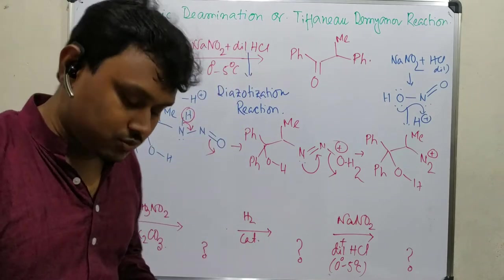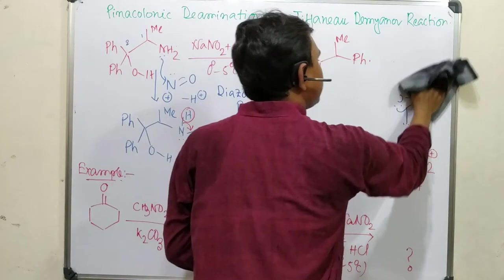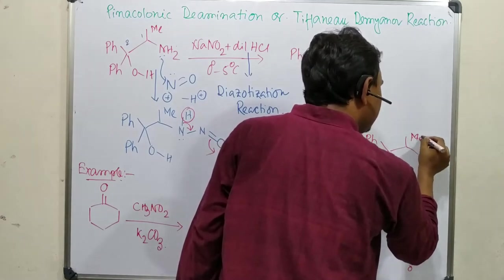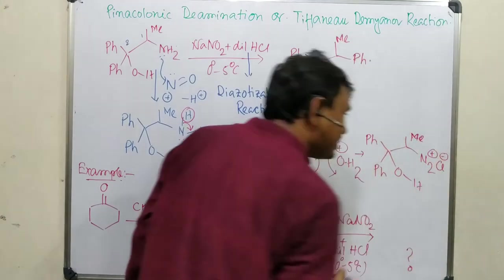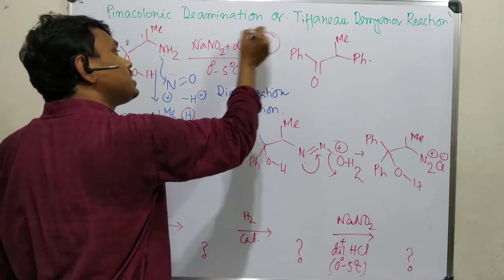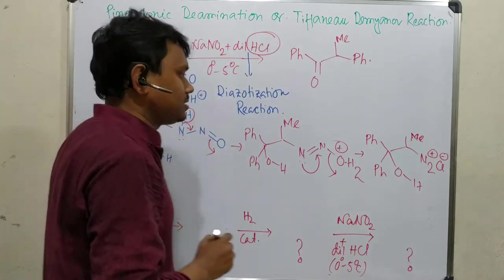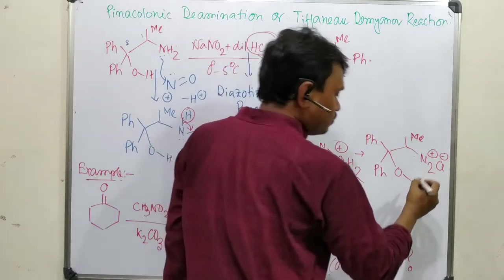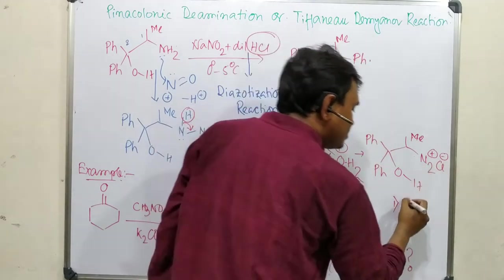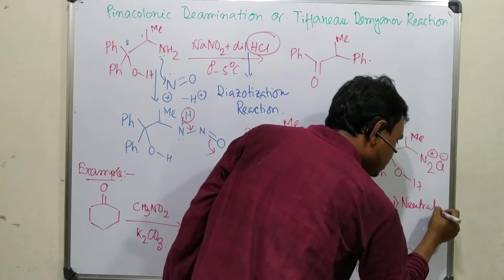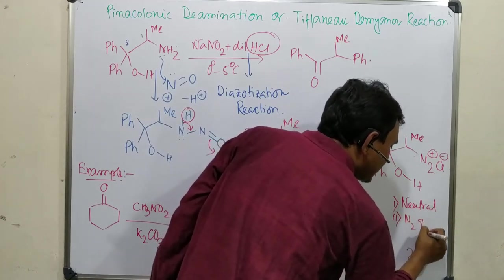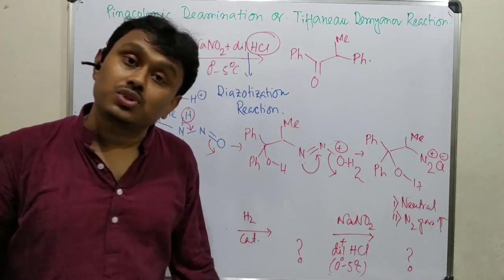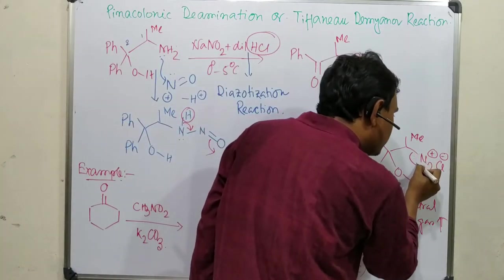This is actually diazonium salt preparation. You can see N₂⁺ — it is a cationic center — so it has a counter anion, which is Cl⁻, because we used HCl initially, making Cl⁻ the source of the counter anion. Now, N₂ is a very good leaving group: first, it is a neutral leaving group; second, N₂ is a gas so it exits the medium; and third, it is electronegative, so it does not want a positive charge.